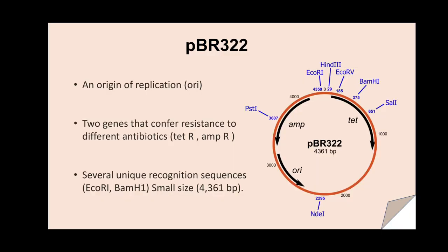pBR322 is a well-known type of plasmid. The acronym PBR stands for plasmid, Bolivar, and Rodriguez, while 322 indicates the variant number. This plasmid is 4361 base pairs long and contains several restriction sites such as EcoRI, HindIII, EcoRV, BamHI, ClaI, and others — these are its unique recognition sequences. It also contains two genes conferring resistance to tetracycline and ampicillin.